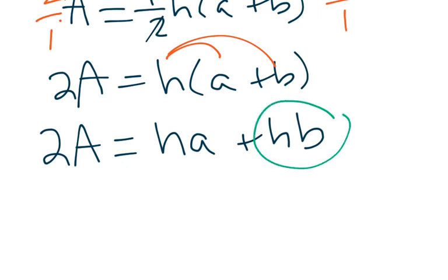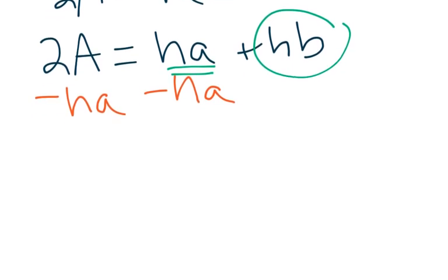Again, we want to get this b by itself, but I can't get rid of that h that's right next to b yet until I get rid of this ha. So I am going to subtract ha on both sides. When I do that, I have 2A - ha, and that's going to give me hb on this side.